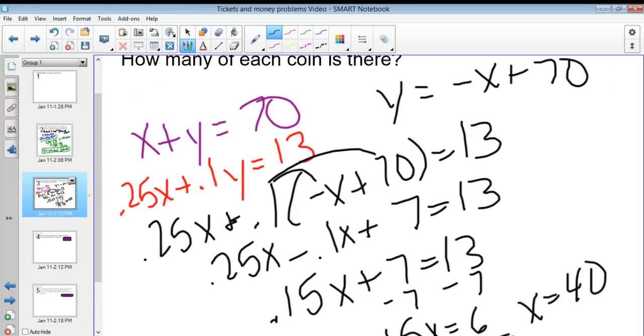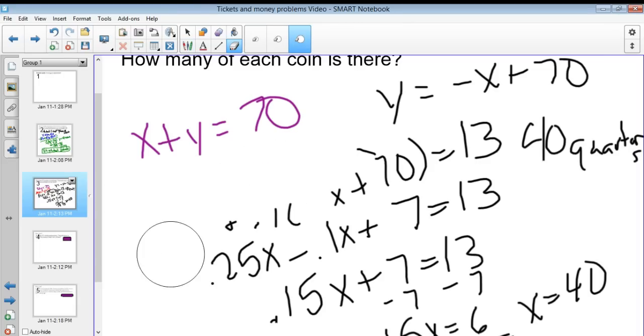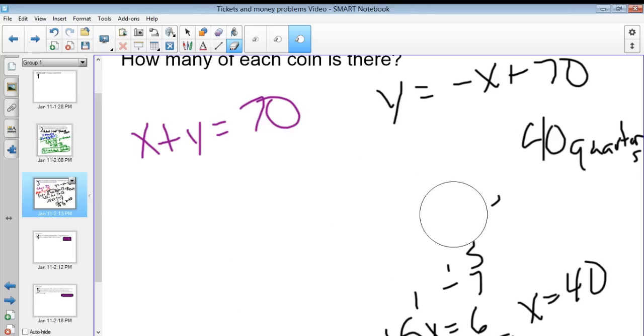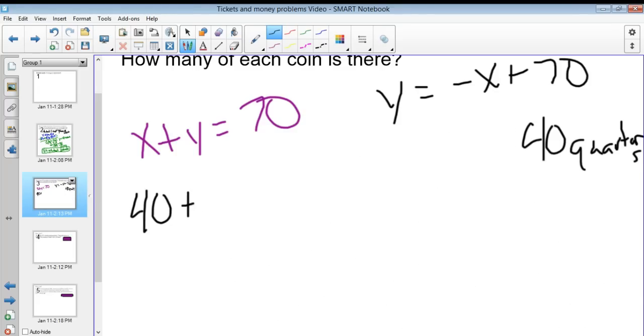That says that X is equal to 40. So that would mean that I have 40 quarters. And then I need to figure out how many dimes. A lot of you can already do this in your head, and you don't even have to do the math here. You would just say 40 plus Y equals 70, and of course that means that there are 30 dimes.